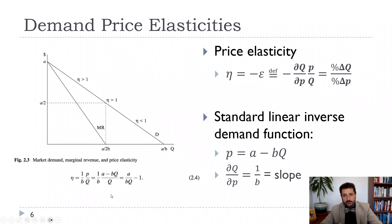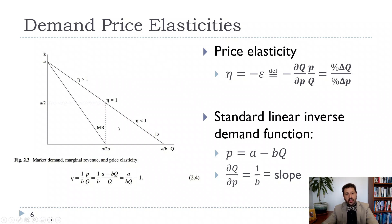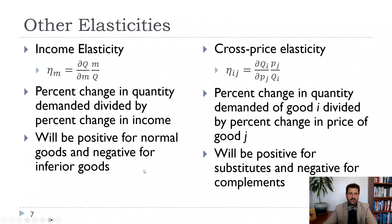Something to note in our linear demand: there's going to be a special point where eta equals 1, where revenue is neutral with respect to a small price change. Up here, eta is larger than one, meaning the percent change in quantity demanded is larger than the percent change in price — so if we reduce price, revenue goes up. Then down here where eta is less than one, revenue goes up if we increase price. Let's take a closer look at that.